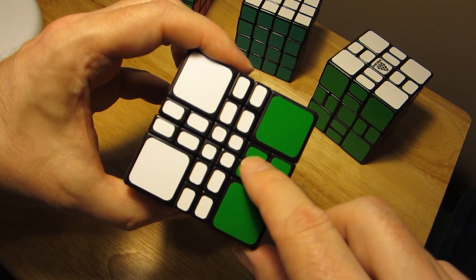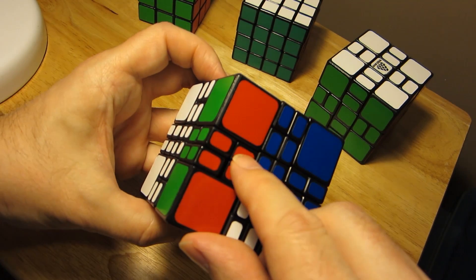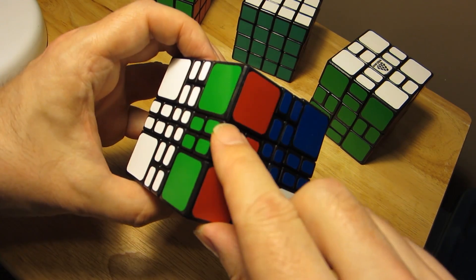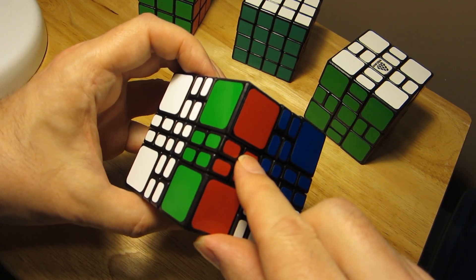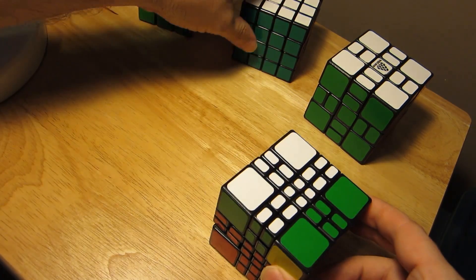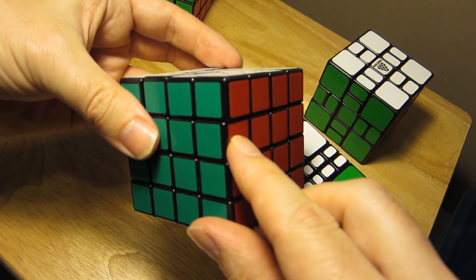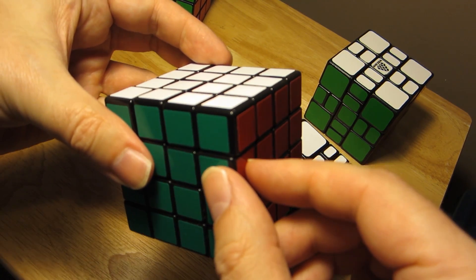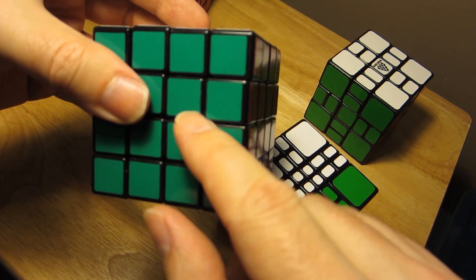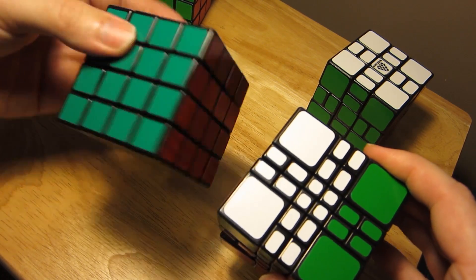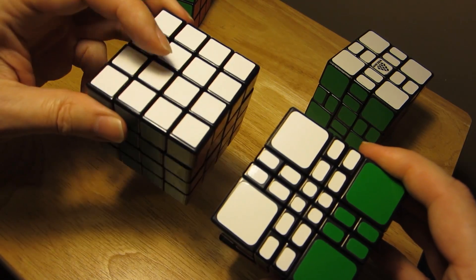...then an inner edge piece right here and another inner edge piece. So these three pieces together form an edge, which is equivalent to an edge on, say, the 4x4 cube. In fact, once we have that edge assembled, we can treat the Mixup Plus 4x4 just like a regular 4x4 cube and solve it the same way.